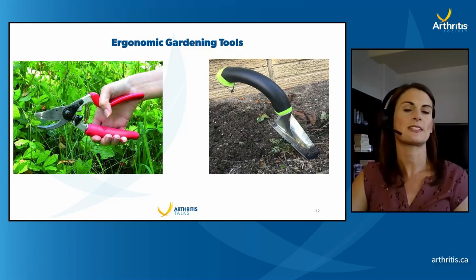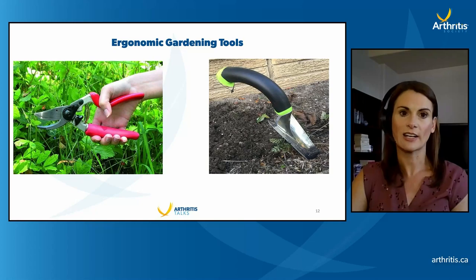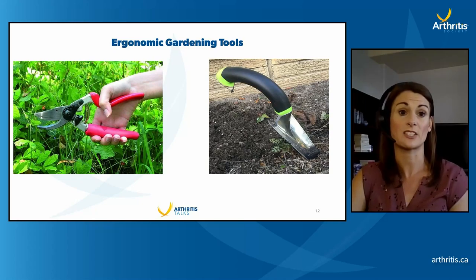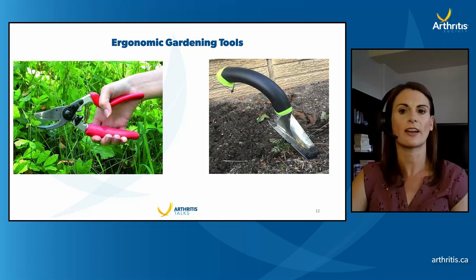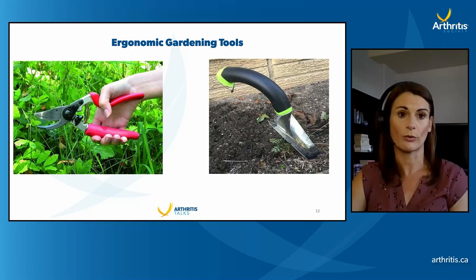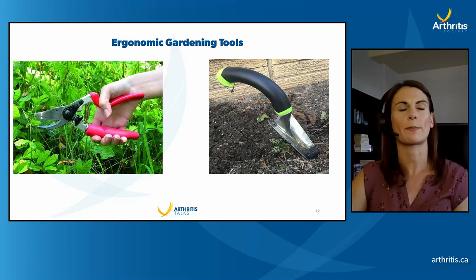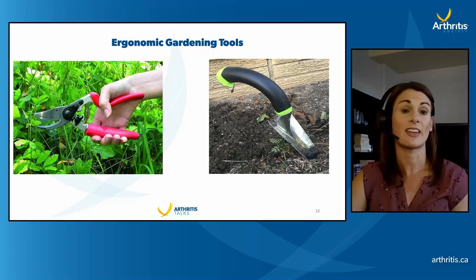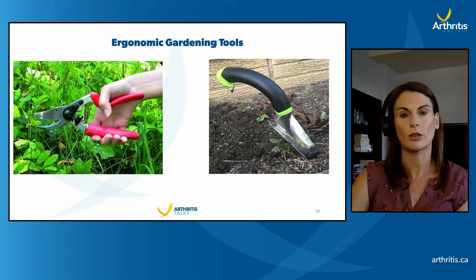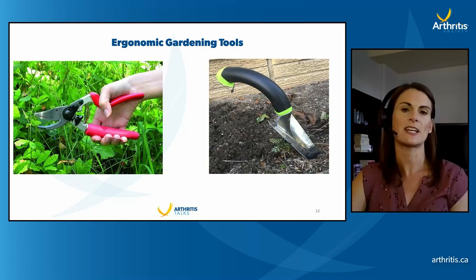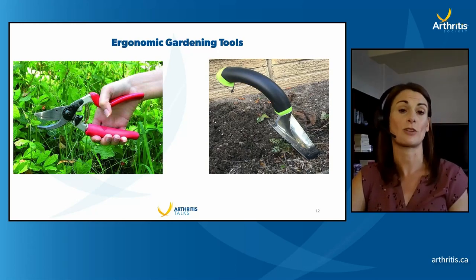Look for ergonomic gardening tools. An ergonomic pruning shears has a cutout section for the thumb so the thumb doesn't have to be abducted far out causing pain, a nice thick handle for the fingers, and it's spring loaded so you don't have to put as much force through. With gardening shears, make sure you're keeping the blade sharp — when it gets dull, you have to put a lot more force through to accomplish the same task. Other gardening tools like small shovels and trowels can have enlarged handles with a curved grip for better finger alignment.